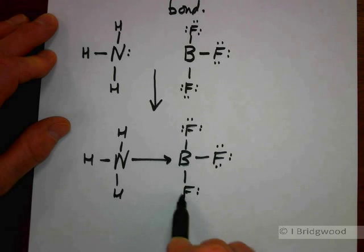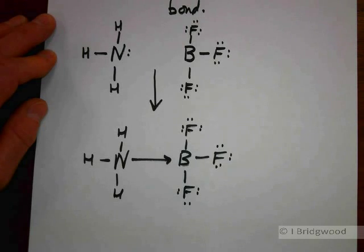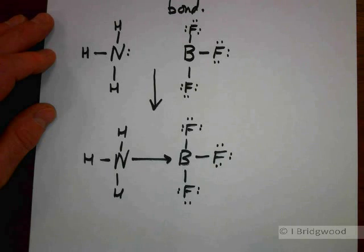Let's put all the electrons on the fluorine. Fluorine, group seven or 17 in the periodic table, needs one extra electron. Therefore, it will form one covalent bond. There we are for our coordinate or dative covalent bond between nitrogen and boron.